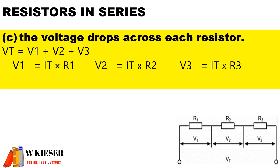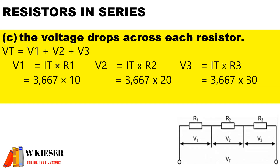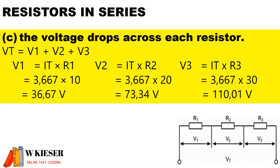The current remains the same throughout the circuit. We multiply the total current by the value of each resistor, and if we add up the sum of the volt drops we should get the total voltage supply for a series circuit.